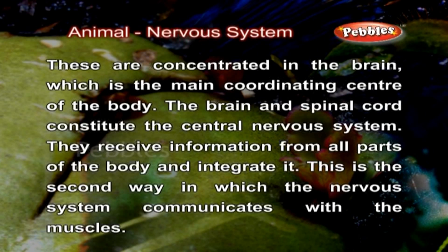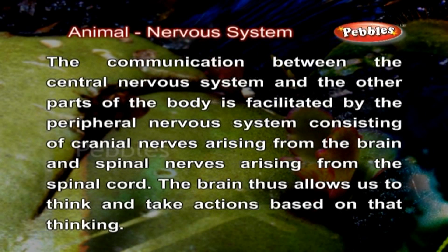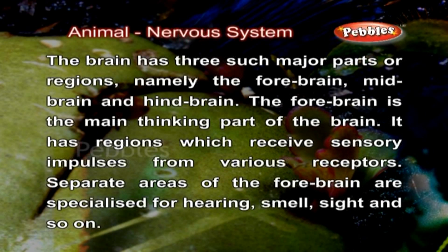The central nervous system receives information from all parts of the body and integrates it. The communication between the central nervous system and the other parts of the body is facilitated by the peripheral nervous system, consisting of cranial nerves arising from the brain and spinal nerves arising from the spinal cord. The brain thus allows us to think and take actions based on that thinking. The brain has three major parts or regions: the forebrain, midbrain and hindbrain.